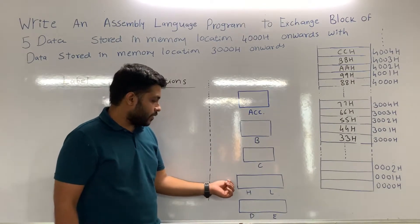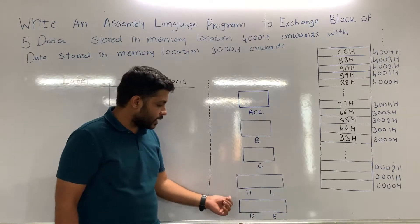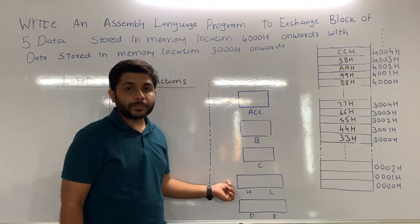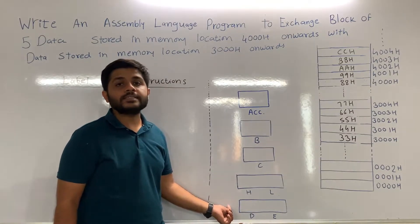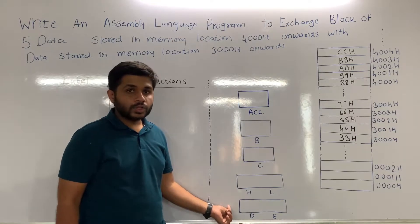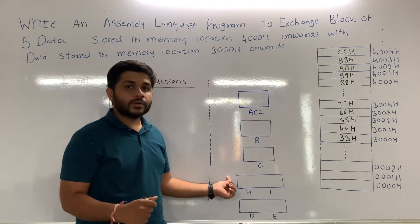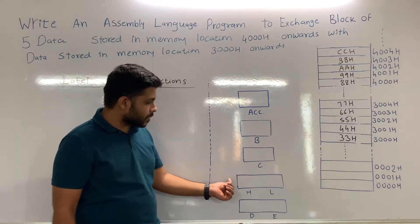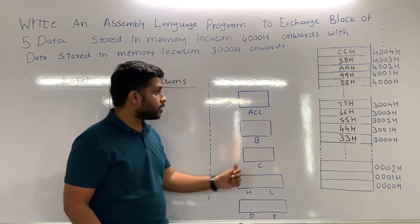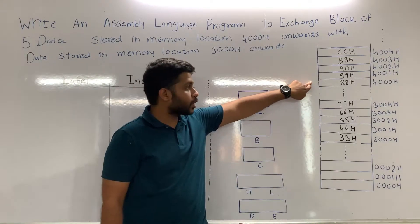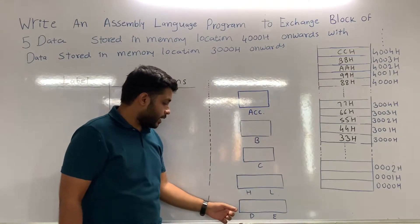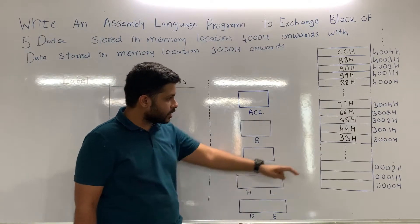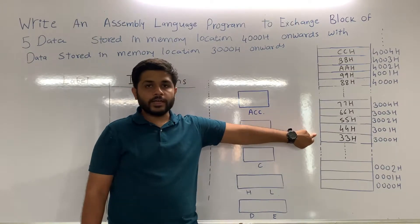We will also use the HL and DE register pairs. The HL pair will be used as the source memory pointer and the DE pair will be used as the destination memory pointer. The source memory pointer is the memory location from where we receive the data, so we will initialize HL with 4000H. The DE pair will be the destination pointer and we will initialize it with 3000H.